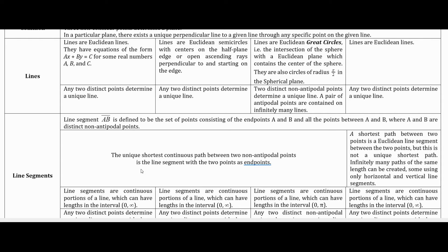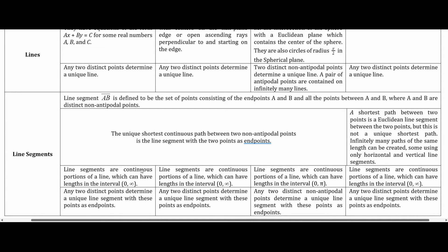In taxicab geometry, many paths of the same length can be created using horizontal and vertical line segments or other combinations, all equal in length as measured by the taxicab metric. In Euclidean geometry, line segments are continuous portions of a line and can have any length in the interval (0, ∞). Any two distinct points determine a unique line segment. That's also true for hyperbolic geometry: line segments are continuous portions of a line with lengths anywhere from zero to infinity, and any two distinct points determine a unique line segment.